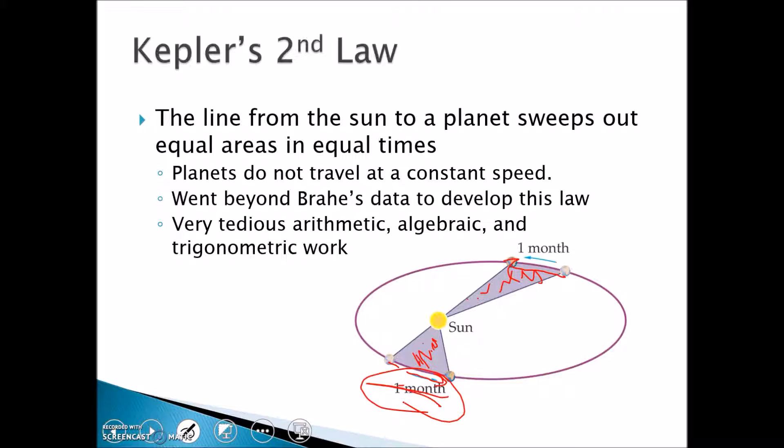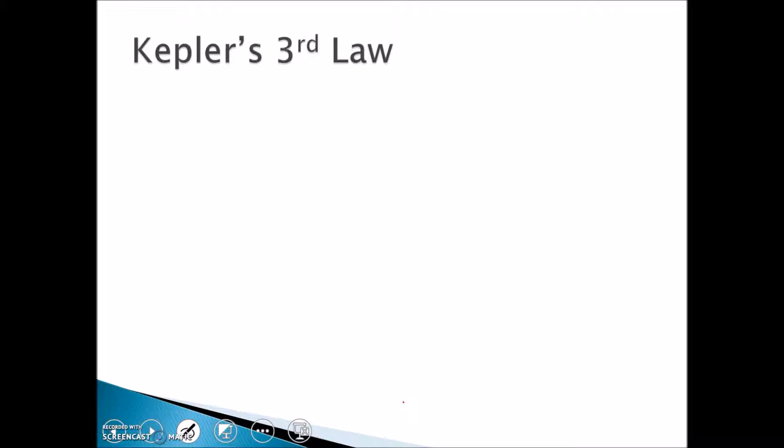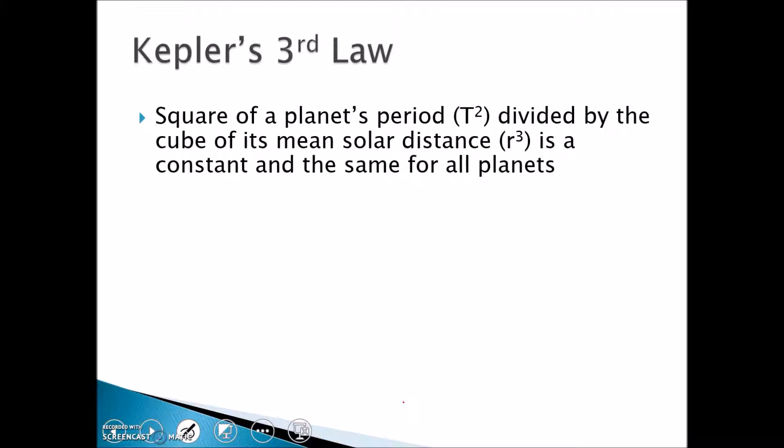His third law, which he considers his greatest achievement, relates a planet's period with its mean solar distance. The planet's period squared (T²) divided by the mean distance from the sun cubed (r³) is a constant value for all the planets in the solar system. So you plug in information for the Earth and that's the same relationship for Mars, Jupiter, and Saturn, as long as the period is expressed in Earth years. This helps us tie two planets in a solar system together. This only applies for objects orbiting the same central point - in this case, the solar system, it's obviously the sun.